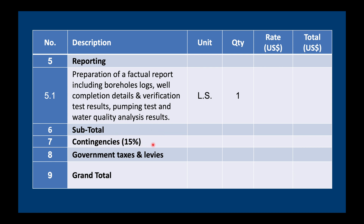Then we have our contingency — item number seven. We can be pretty sure we're not going to go too much below 100 meters, so it's only about 15%. But contingencies could be higher if we're less certain — for example, 25%. Finally, we should add any government taxes or other costs the contractor has to pay, because they're going to charge it to us anyway. If this is forgotten, it can be quite a big surprise if VAT or other charges appear at the bottom of an invoice that we didn't budget for. Adding everything together gives us our grand total.